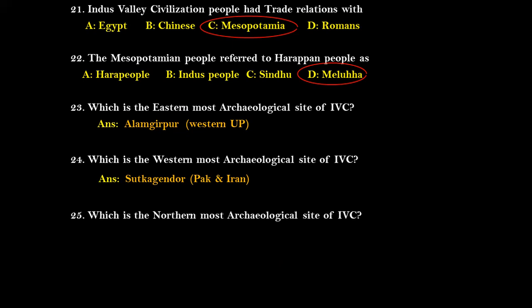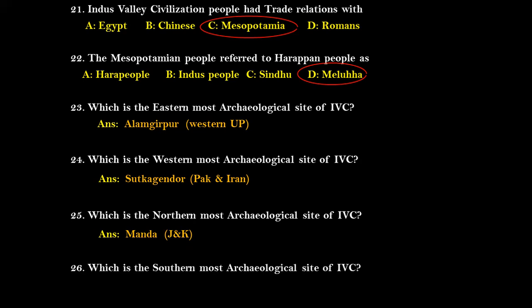Question twenty-five: Which is the northernmost archaeological site? The right answer is Manda, in Jammu and Kashmir, India. Question twenty-six: Which is the southernmost site? The right answer is Daimabad, in Maharashtra. So the eastern, northern, and southern extents are all in India — only the westernmost site, Sutkagendor, is beyond Indian borders, bordering Pakistan and Iran.